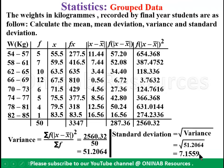The square root of 51.2064 gives 7.1559. We have now calculated the mean, mean deviation, variance, and standard deviation of this grouped data distribution. Remember to subscribe to our YouTube channel at Owning Number Resources. Thank you for watching.